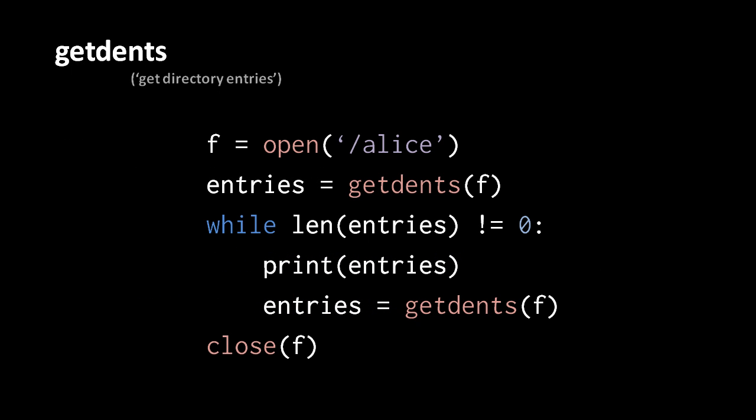To read the contents of a directory, we have the system call getdents, as in get directory entries. First we open the directory just like a file — that returns a file descriptor pointing to a directory — and then when we invoke getdents with that file descriptor, it returns some number of entries from that directory. For basically the same reasons as the read system call, we don't know how many entries getdents will return, but it's always guaranteed to return at least one. When getdents returns zero entries, we know there are no more entries to read. Each returned entry is a data structure containing an inode, the associated file name, the length of that file or directory, and something indicating the type — whether it's a file, directory, or one of a few different file types.